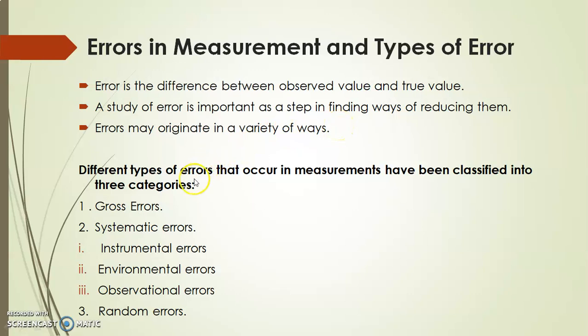Different types of errors that occur in measurement have been classified into three categories. The first category is Gross Error, then Systematic Error, and then Random Error. Systematic error is further classified into Instrumental Error, Environmental Error, and Observational Error. So in types of error there are three main errors: Gross Error, Systematic Error, and Random Error.